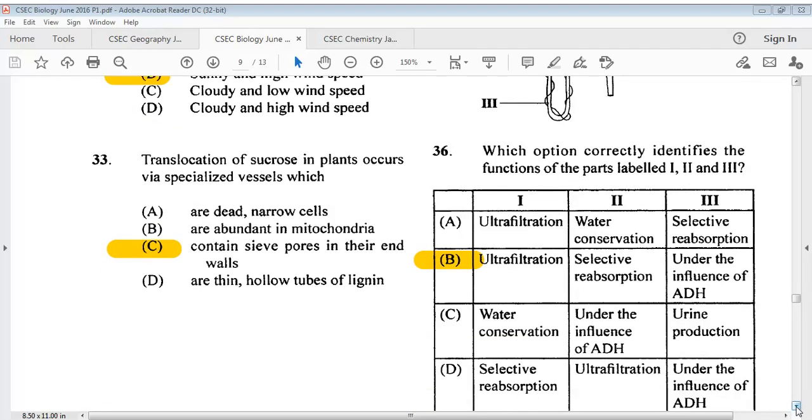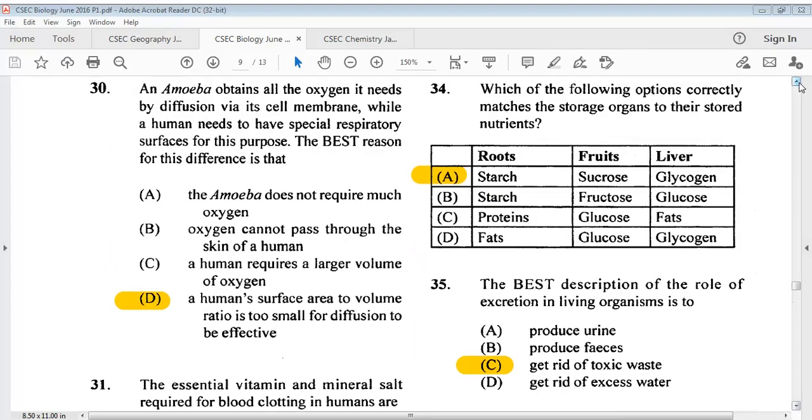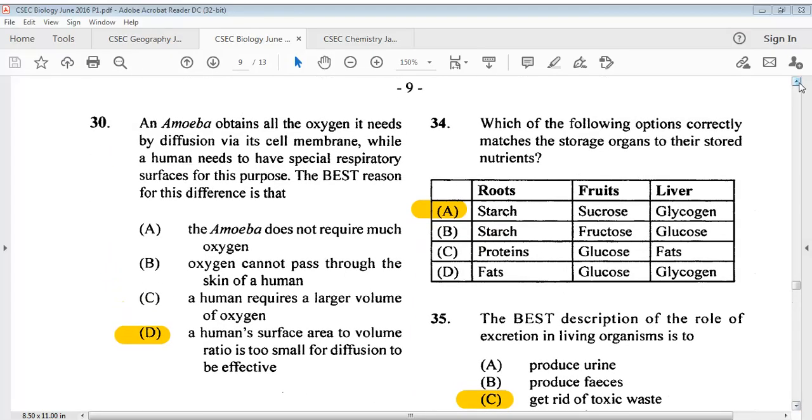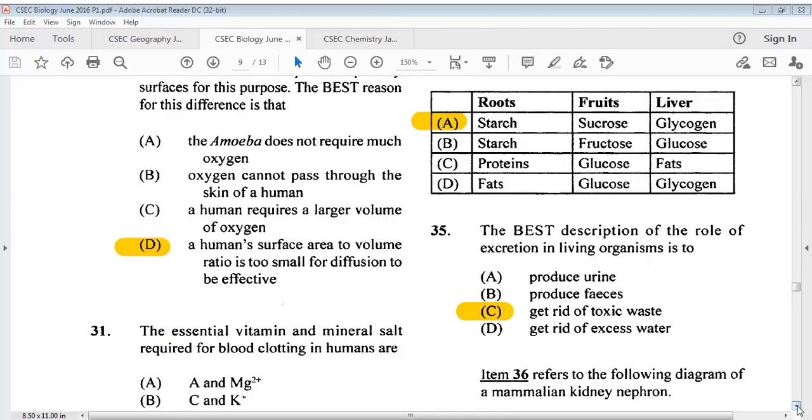Question 33, the question says translocation of sucrose in plants occurs via specialized vessels. The answer is C. For question 34, which of the following options correctly matches the storage organs to their stored nutrients? The answer is A. Question 35, the best description of the role of excretion in living organisms is to? The answer is C, get rid of toxic waste.